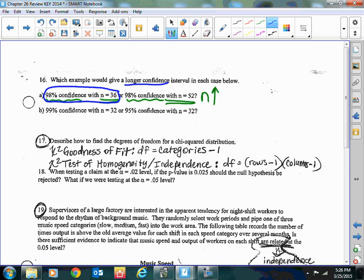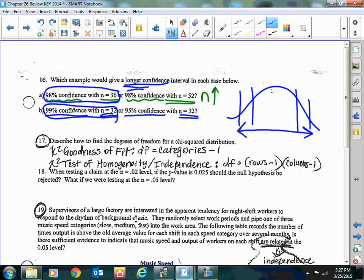B: you can see the size of the sample is the same, so that standard deviation is staying the same. The difference is 99% confidence versus 95% confidence. Remember, critical values: 99% confidence versus 95% confidence. So your 99% confidence is wider. So the 99% confidence is the larger interval.